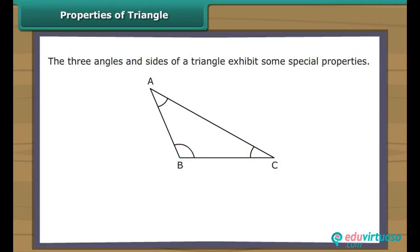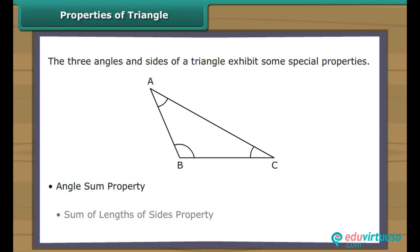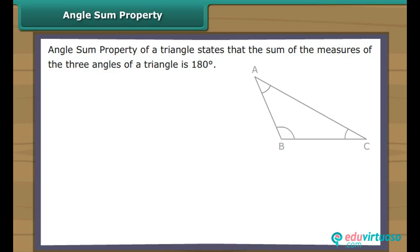Properties of a triangle. The three angles and sides of a triangle exhibit some special properties: the angle sum property and the sum of lengths of sides property. Angle sum property states that the sum of the measures of the three angles of a triangle is 180 degrees. In the figure, angle A plus angle B plus angle C equals 180 degrees.